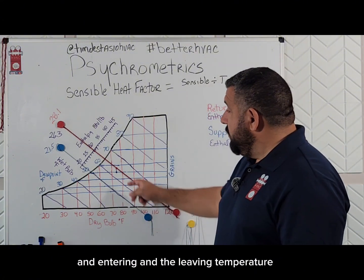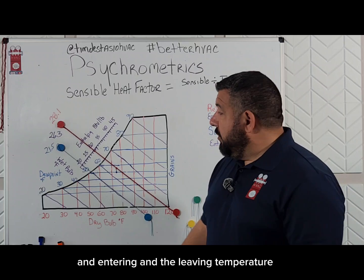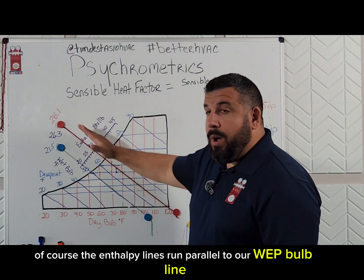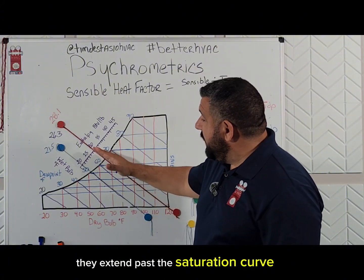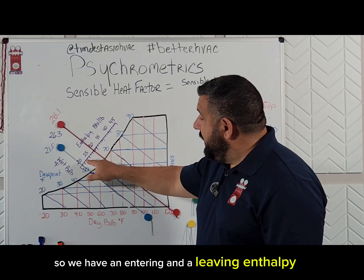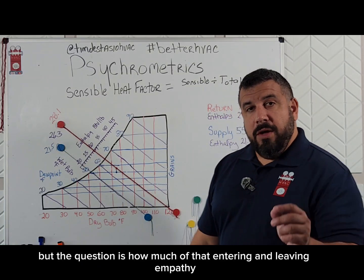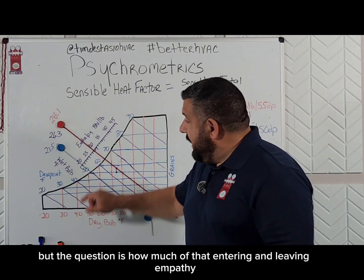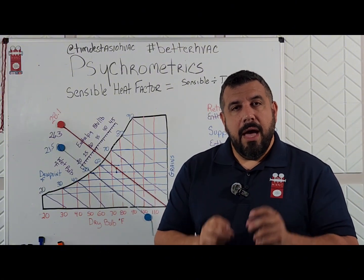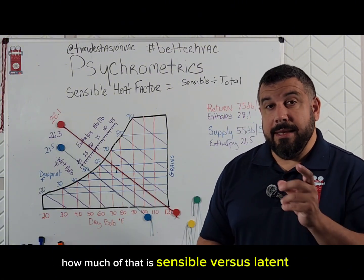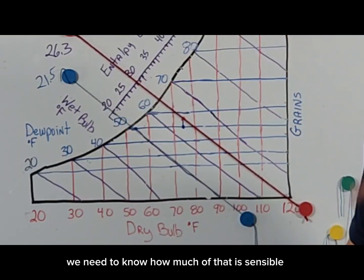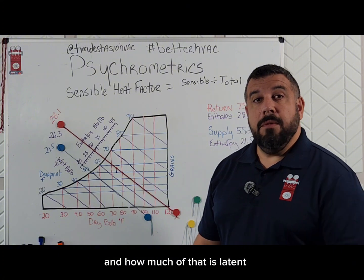Last time we plotted two points — an entering and a leaving temperature — and then we plotted our enthalpy lines. The enthalpy lines run parallel to our wet bulb lines. They extend past the saturation curve and they cross this scale right here. We have an entering and a leaving enthalpy, but the question is: how much of that difference in enthalpy that our equipment is removing is sensible versus latent?